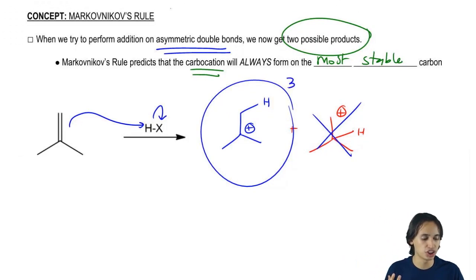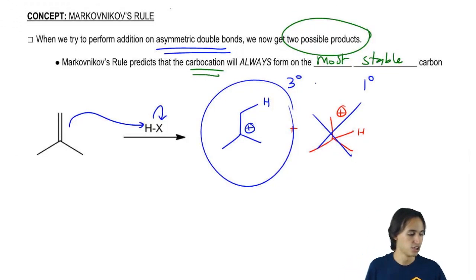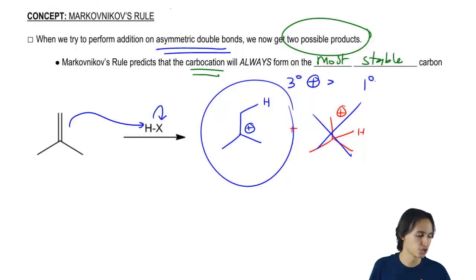Notice that this was tertiary while this one was primary. There's a huge difference there. Tertiary carbocations are much more stable than primary carbocations.